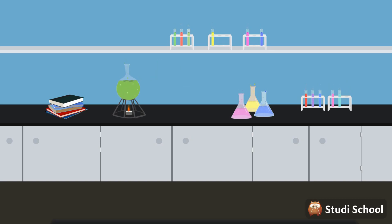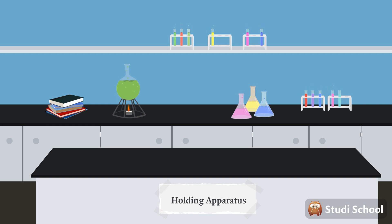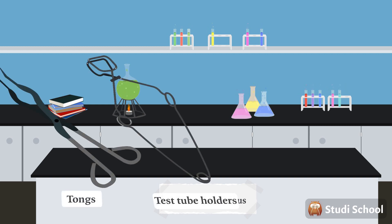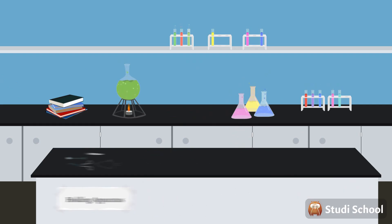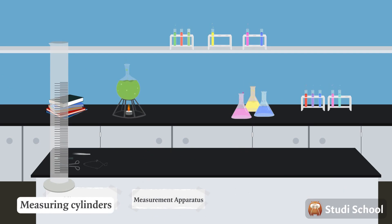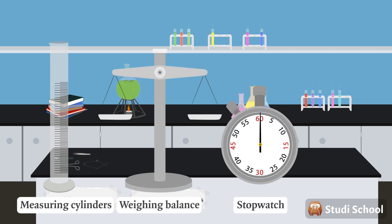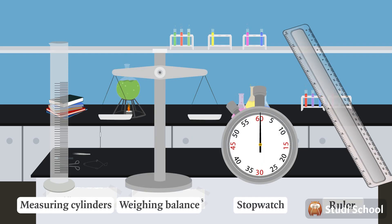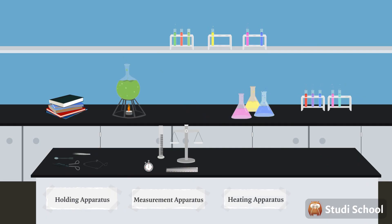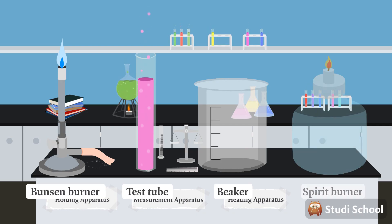The first one is for holding objects. These include tongs, test tube holders, spatulas, and forceps. Then there are apparatus for measuring things. These include measuring cylinders, weighing balance, stopwatch, and ruler. Then we have apparatus for heating. These include Bunsen burner, test tube, beaker, and spirit burner.